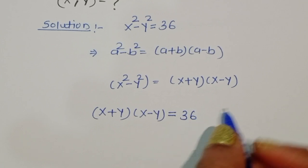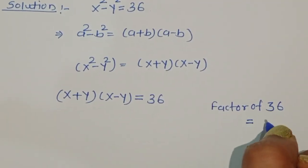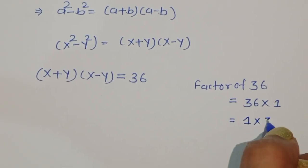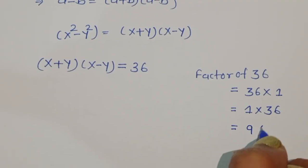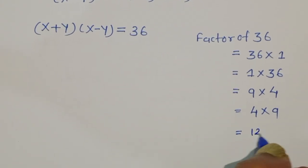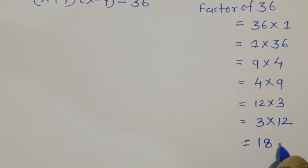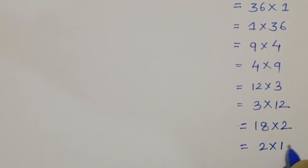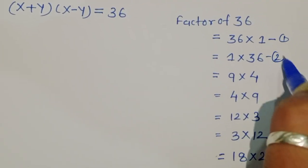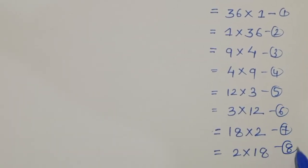Now we have to find the factors of 36. The factor pairs of 36 are: 36×1, 1×36, 9×4, 4×9, 12×3, 3×12, 18×2, and 2×18. So there are 8 factor pairs for 36.